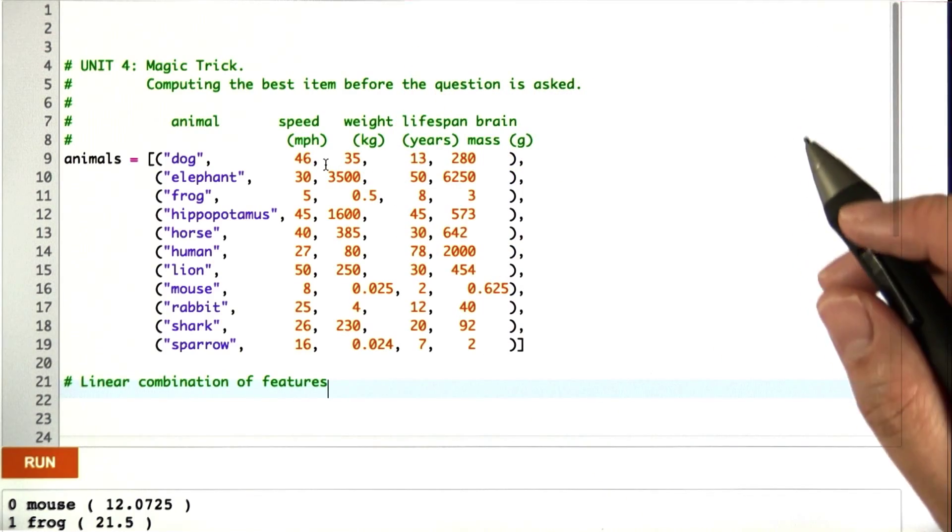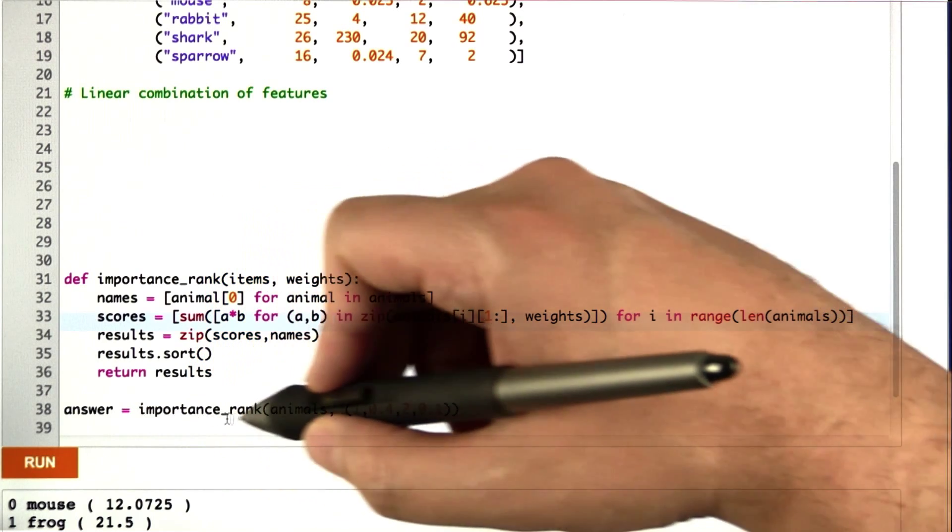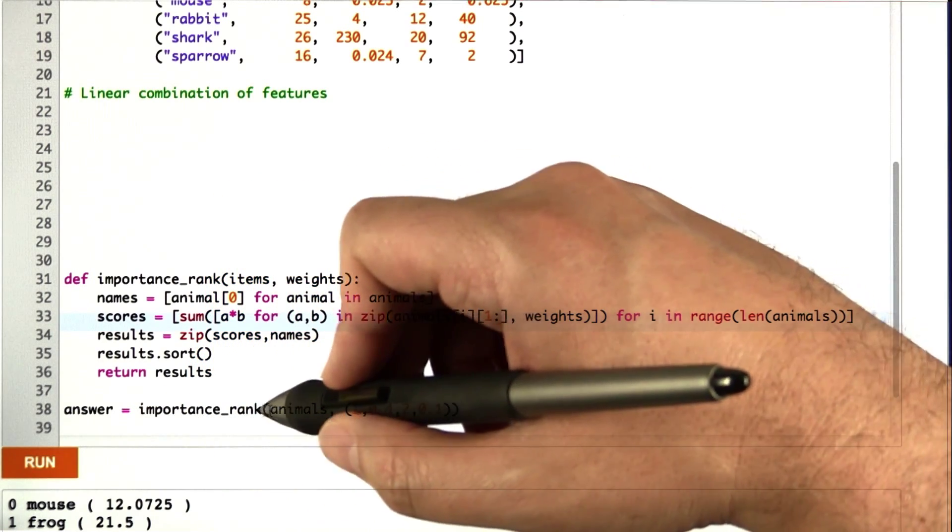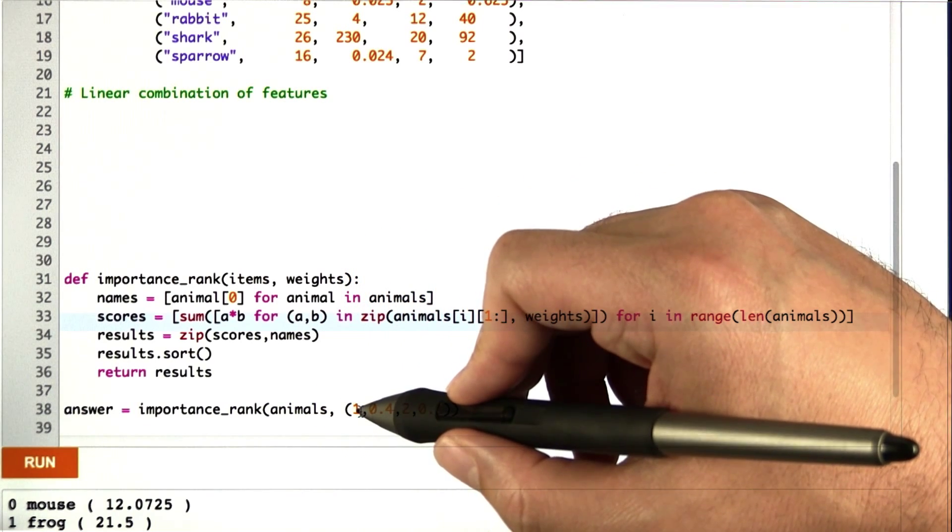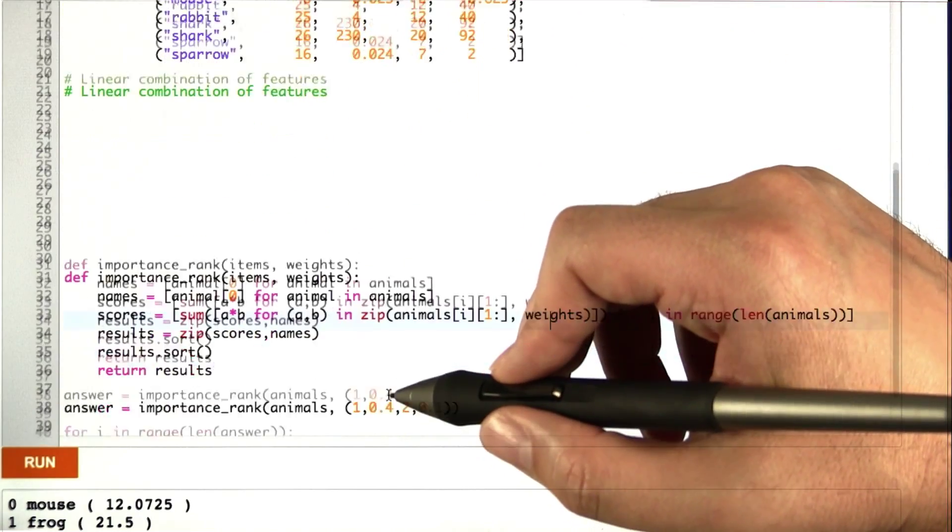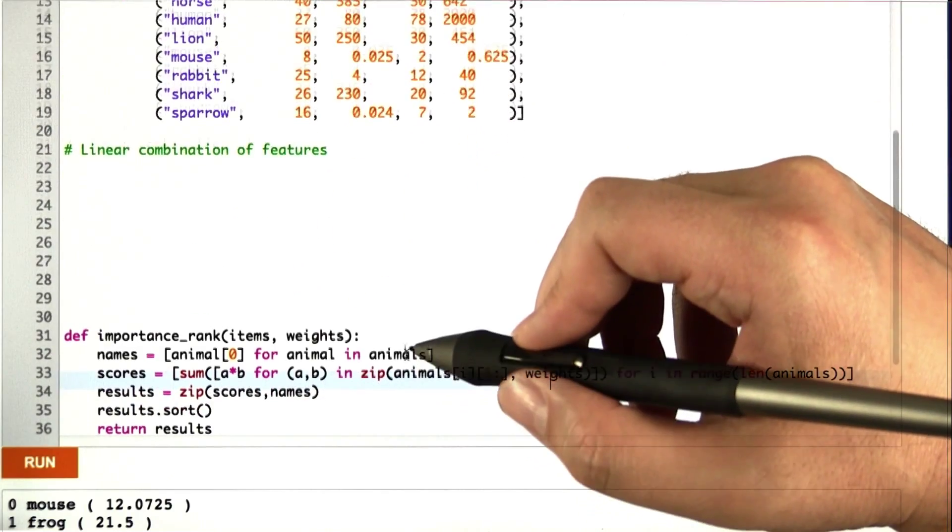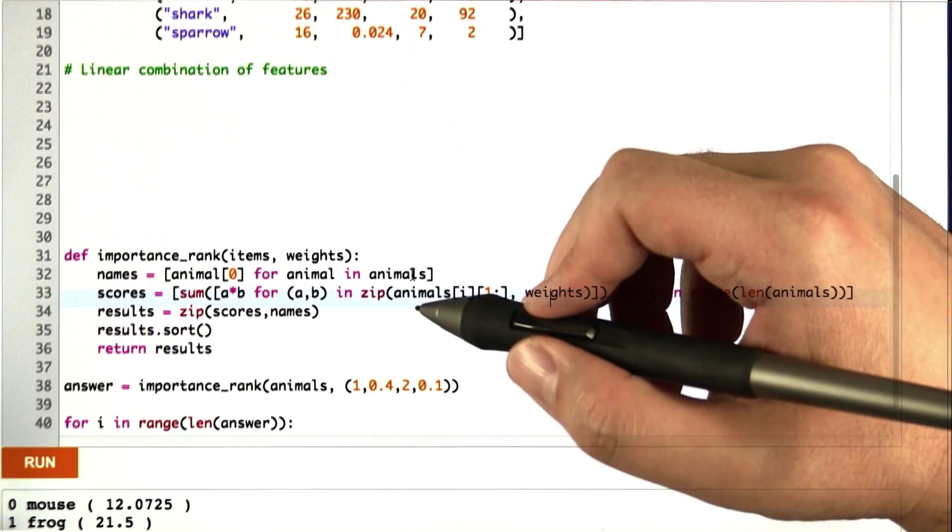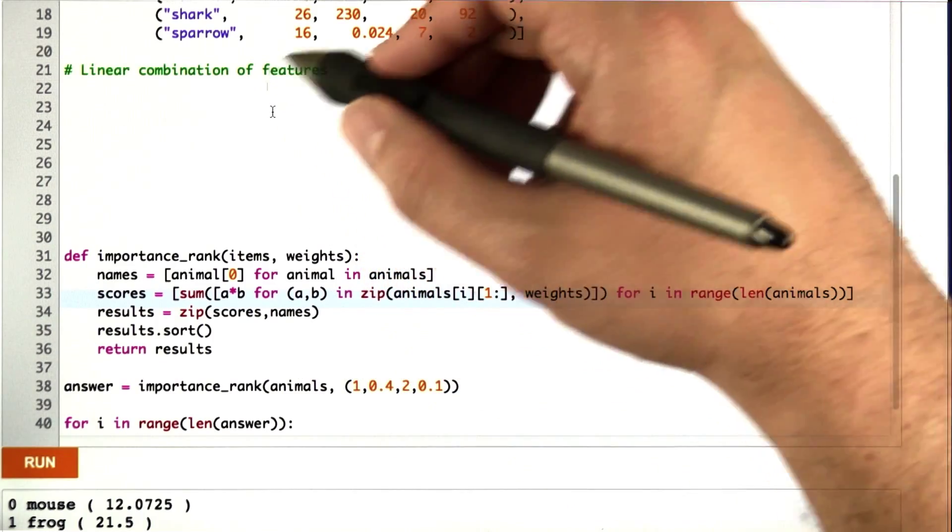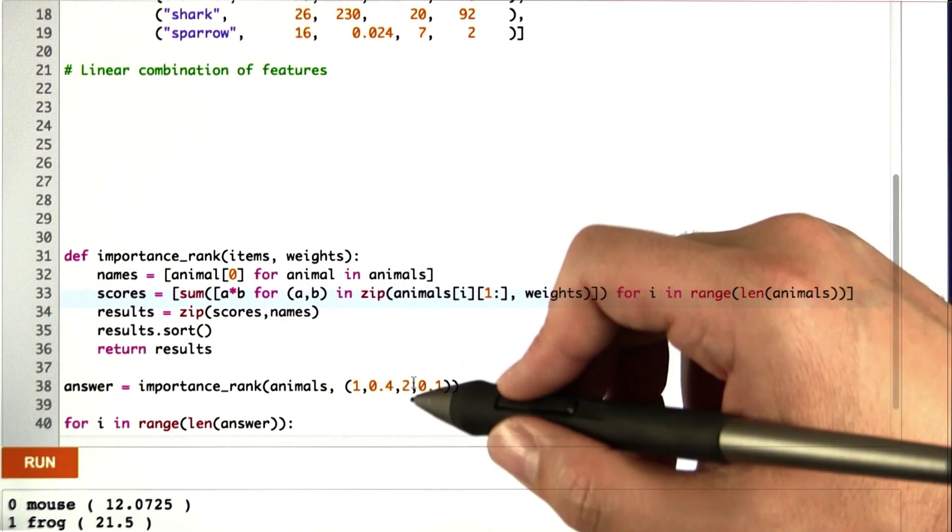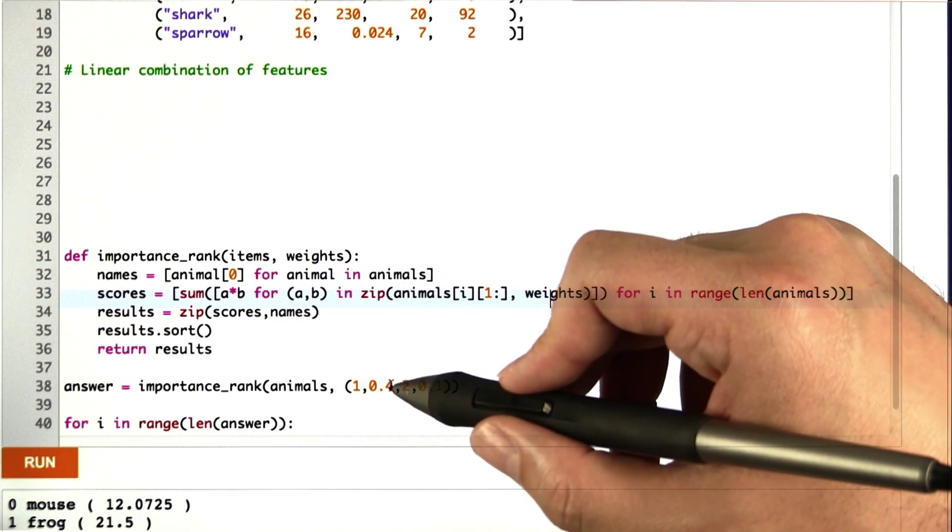In fact, I've got the code right here for you to look at. What I'd like you to do is run this code on this data, and what you do is you call ImportanceRank on this data set, the animals, and you give it the weights. I gave it a weight of 1 for the speed, 0.4 for the weight, 2 for the lifespan, and 0.1 for the brain mass. If you were to run it with these weights, it would actually compute a score for each of the animals and then print them out in sorted order. But I want you to give your own weights here. Don't use mine because that wouldn't be very tricky, would it?